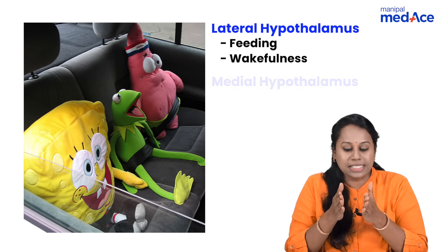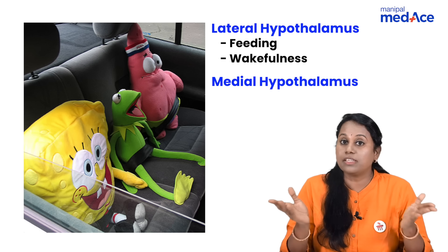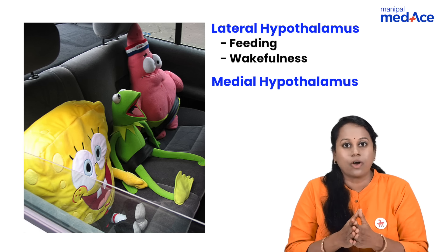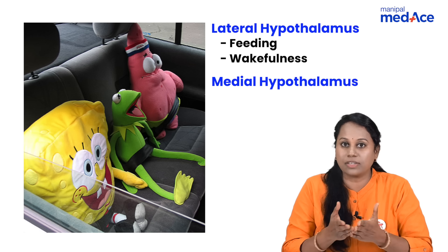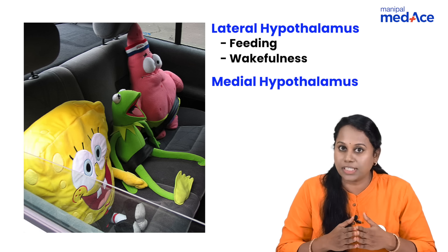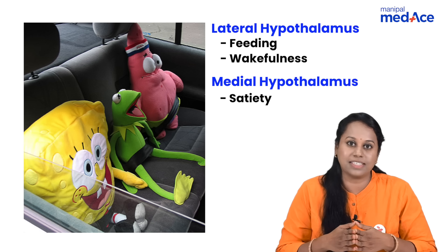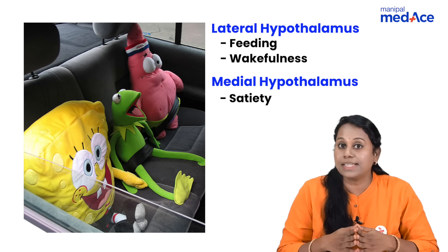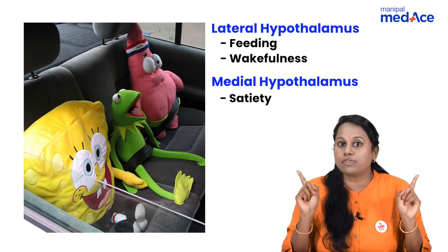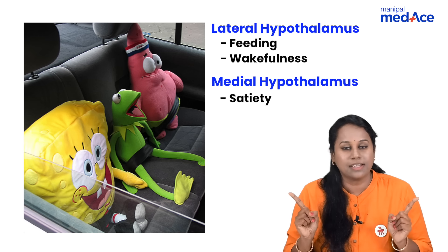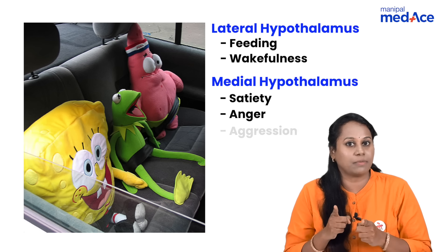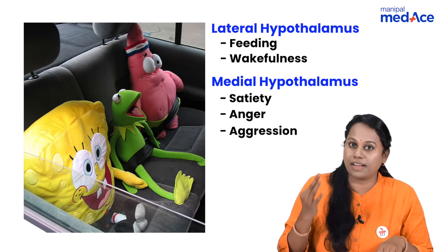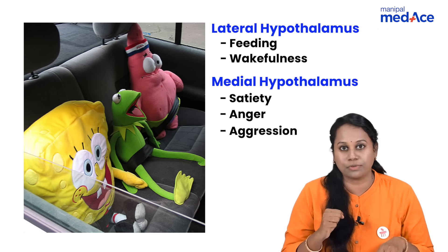The poor person sitting medially in the center is not near the window, so he cannot buy anything. Opposite of feeding — he is not eating. Opposite of feeding is satiety, always in a state of stomach fullness. But he sees the two lateral people eating nicely, so he is getting angry and becoming aggressive. So, satiety, anger, and aggression are functions of the medial hypothalamus.